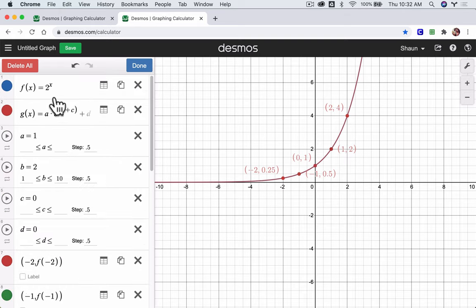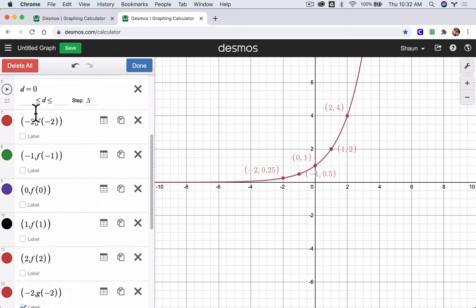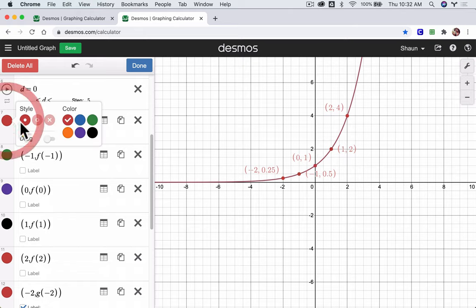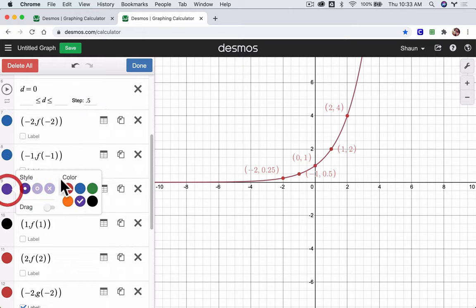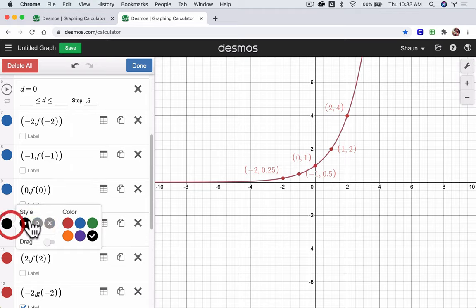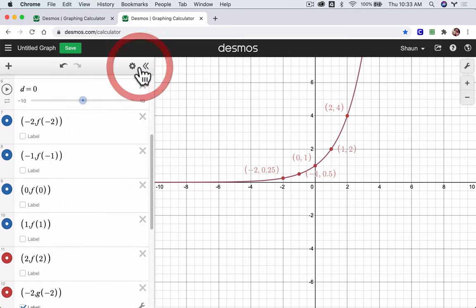And for f, I notice the function is blue. So I'm going to click on all of the blue functions. The points here, make them blue. Blue, blue, and blue. And then I click done.